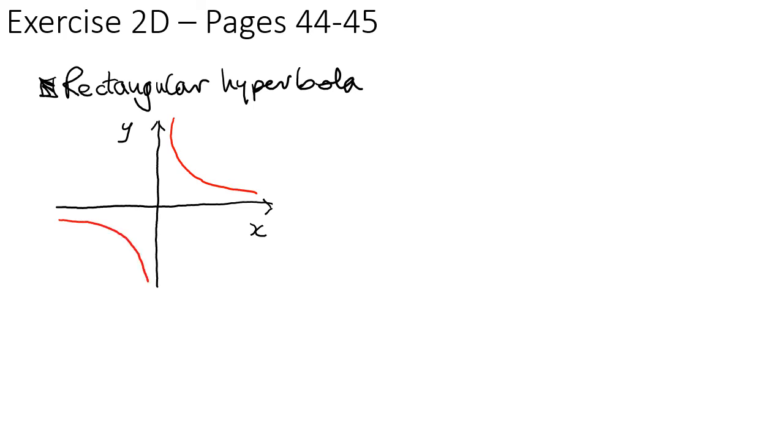We'll recognize that as the reciprocal graph. Its equation in Cartesian form will be xy equals c squared. In parametric form it will be x equals ct and y equals c over t. t can be any real number but not zero.